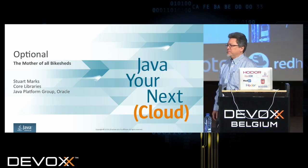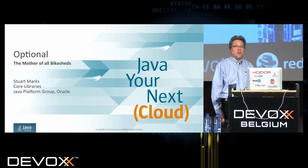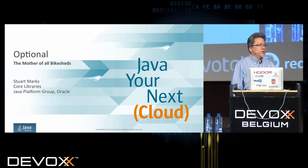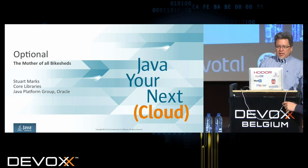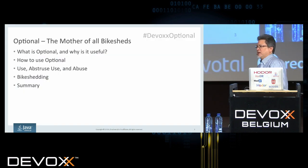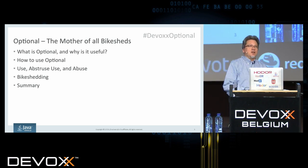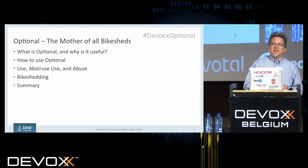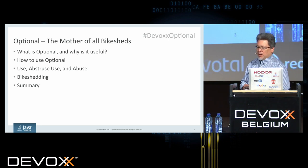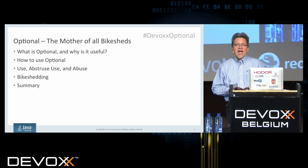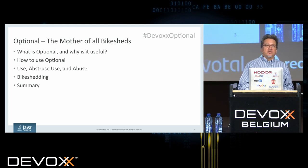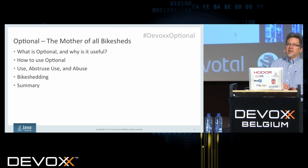Good morning. Thank you for coming. My name is Stuart Marks. I work in the core libraries team in the JDK group at Oracle. Today's talk is 'Optional: The Mother of All Bike Sheds.' The notion of a bike shed is that Optional seems to be a pretty simple class, but it's generated email discussions far out of proportion with what's apparently going on in it. There's a lot more going on than might meet the eye, hence this talk.